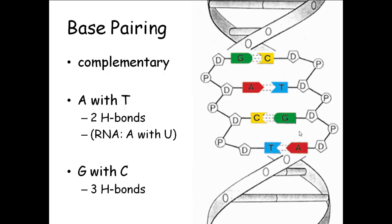So if this side has A, what's over here? T. Don't worry about U yet, but if I were reading DNA to make RNA, I'd put U instead of T.